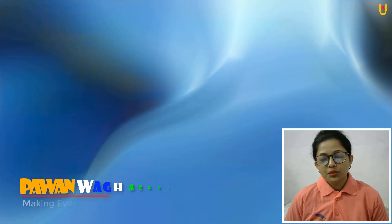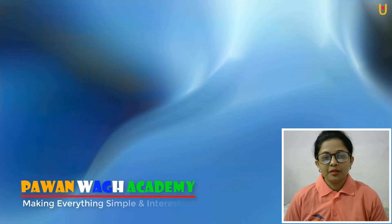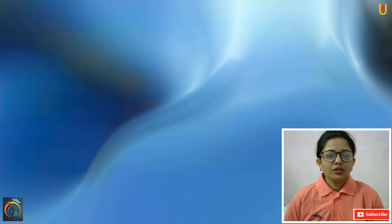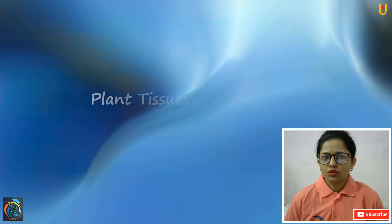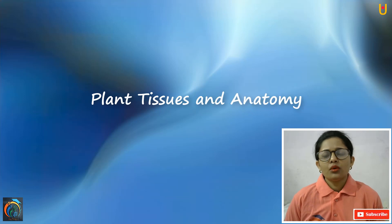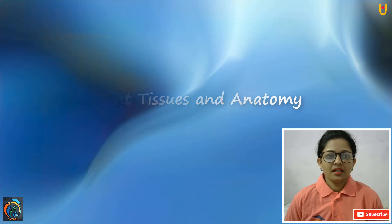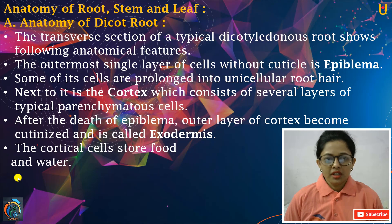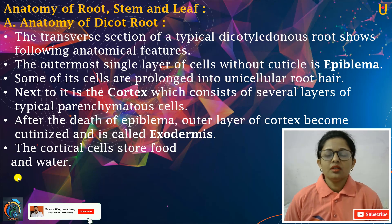Hello everyone, welcome to Pavanvaak Academy. Ayesha hai, aap sab loog acche honge aur surakshet honge. As you know, Class 11 ka chapter hum log running mein hai — plant tissues aur anatomy wala. Hum logon ne almost chapter ka 70 se 80 percent complete kar liya hai. Last video mein hum logon ne secondary growth hoti hai, stems ki, roots ki, all over plants ki — woh hum logon ne discuss kari.